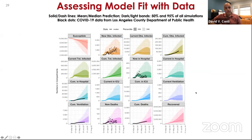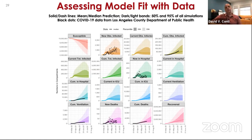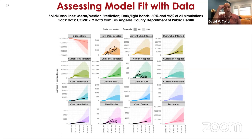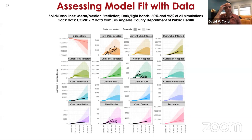The model fit slide shows projections versus observed data across various compartments and their cumulative versions. The new observed infected cases have high variability, while the cumulative observed infection is more stable and informative for estimation. The model weights deaths more heavily than infection counts in estimation, because the total number of infected is essentially an unknown parameter that drives the number of observed infections.